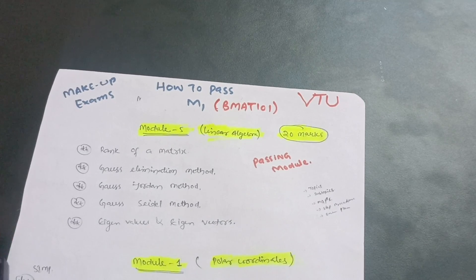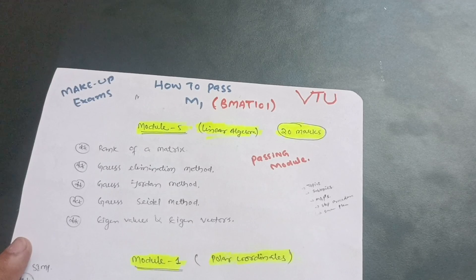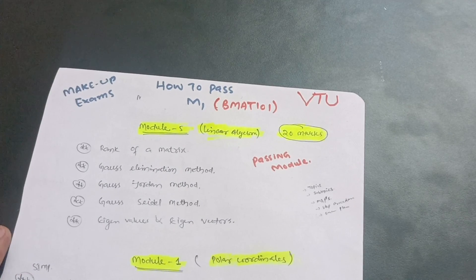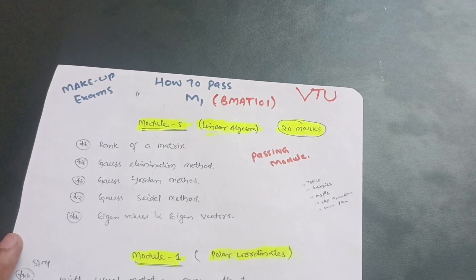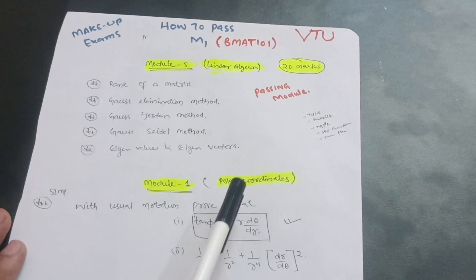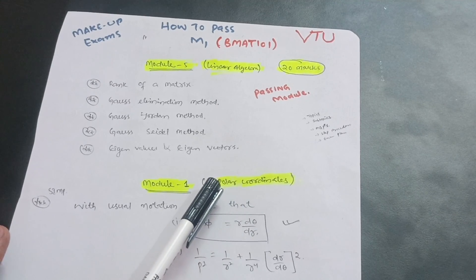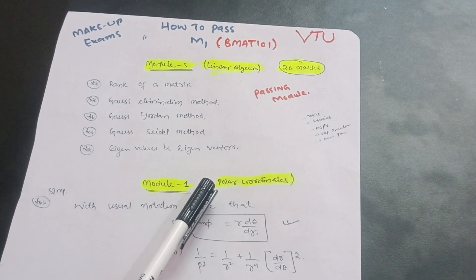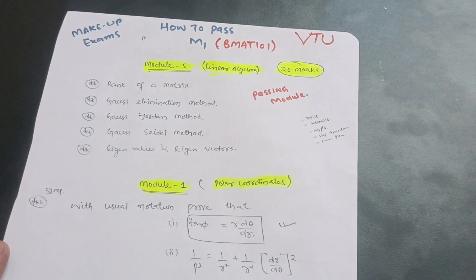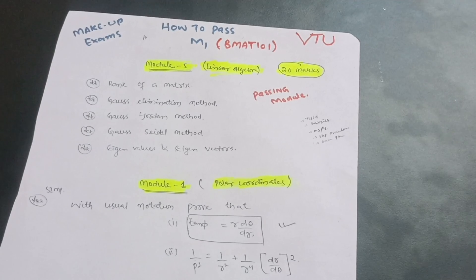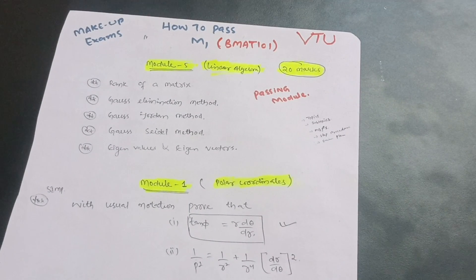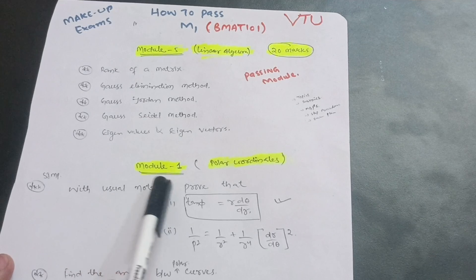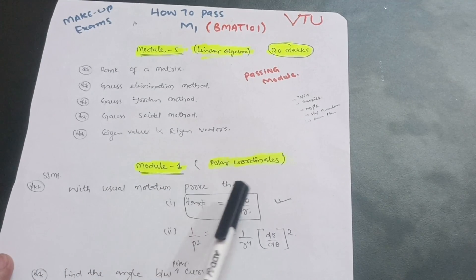You should have an exam plan — it's getting late, so make one today itself. Module 1 is introduction to polar coordinates, which is almost similar for all branches, so I've made a general video for all branches. For the branch-specific MAT series videos — BMATS, BMATC, BMATM — covering CSE, mechanical, civil, and electrical, I will share links in the description box. Another important topic similar for all branches involves, with usual notation, proving that tan φ equals r dθ/dr.